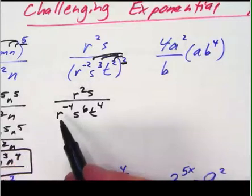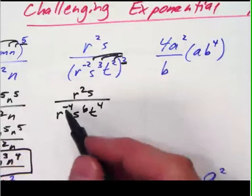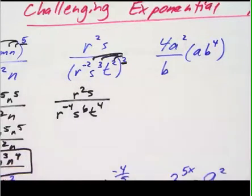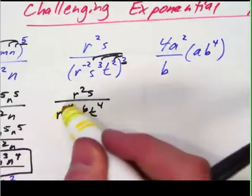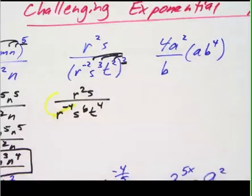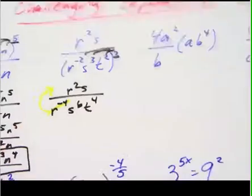Now anytime I see a negative exponent I want to move it, I want to flip it up top. Negative exponents flip so I'm going to take this from the denominator and move it up top to the numerator. I'm going to do that right now because that's where that's going to end up is up here.